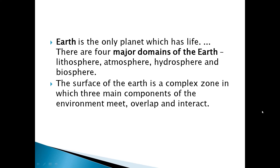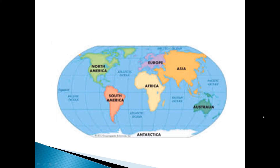The three main components are land, air, and water. Land means lithosphere, air means atmosphere, and water means hydrosphere. These three main components meet together, sometimes overlapping, and sometimes interaction occurs among these three elements. Now this is the map of the seven continents.